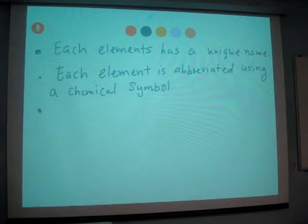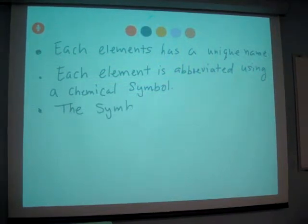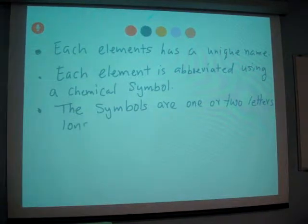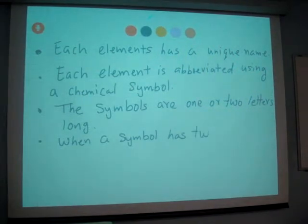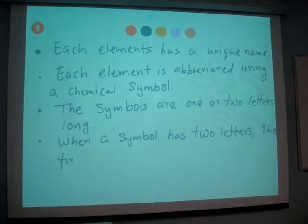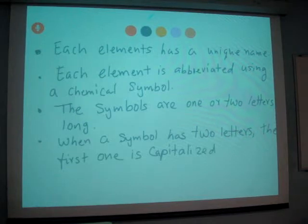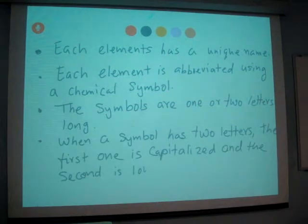So symbols are one or two letters long. And how do we write that? So the first letter is always capital. When a symbol has two letters, the first one is capitalized and the second is lowercase.